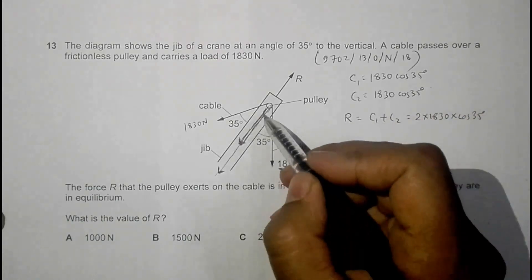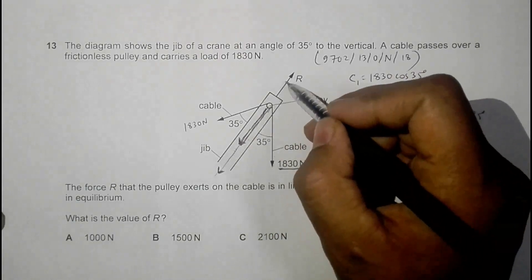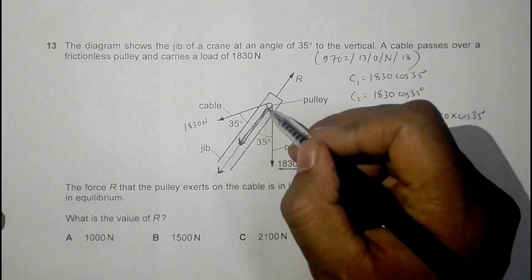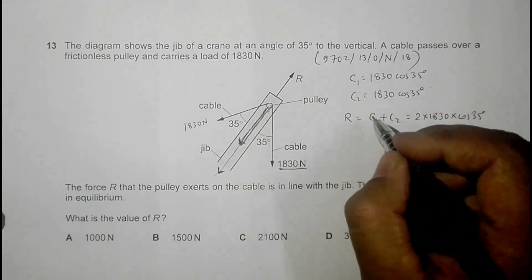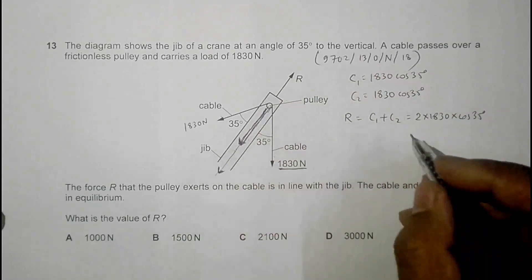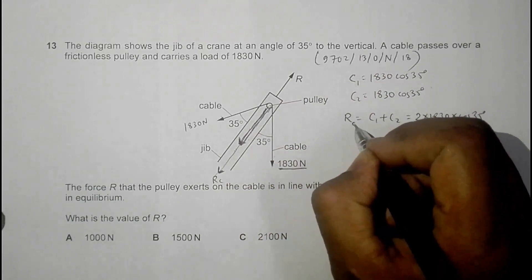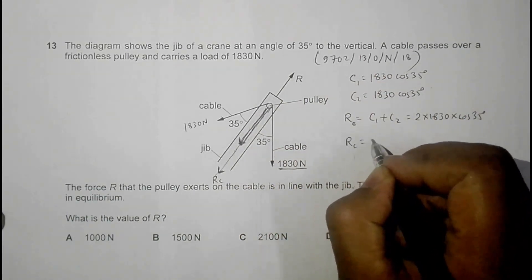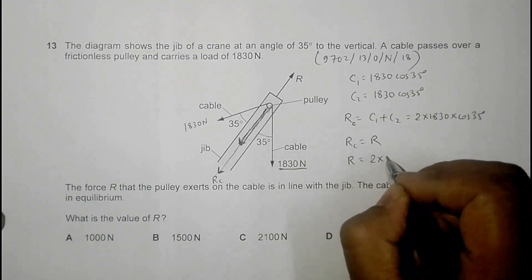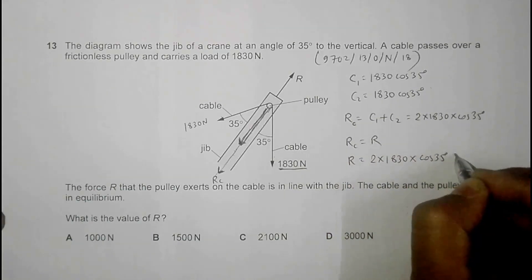This is the total force here, and since the system is in equilibrium, this force should be equal to this force. So the resultant of these two forces which acts here should be equal to this. So that means this resultant Rc should be equal to R, which means R should be equal to 2 times 1830 times cos of 35 degrees.